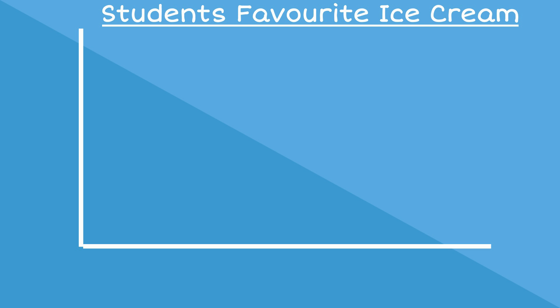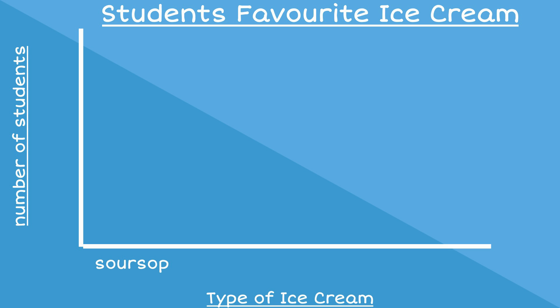She decides to represent this information in a bar graph. First, she has to put a title on the top of her bar graph. She names it Students' Favorite Ice Cream. The height of the bar graph represents the number of children in each category, and the width of the bar graph is used to represent the different flavors of ice cream.